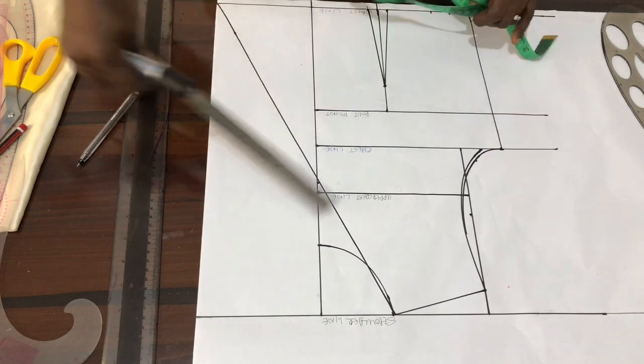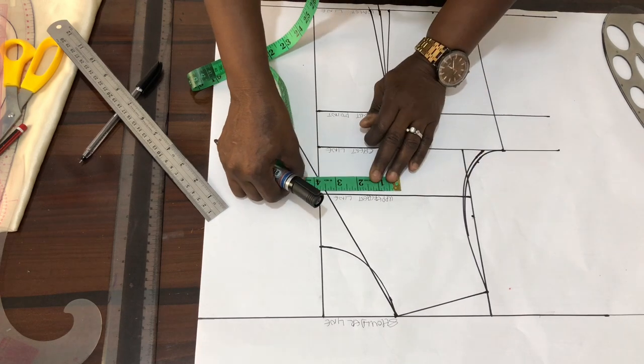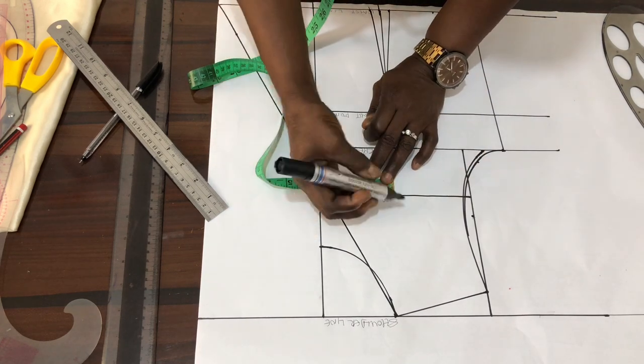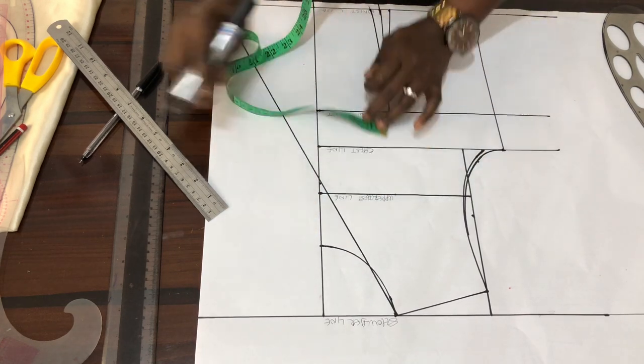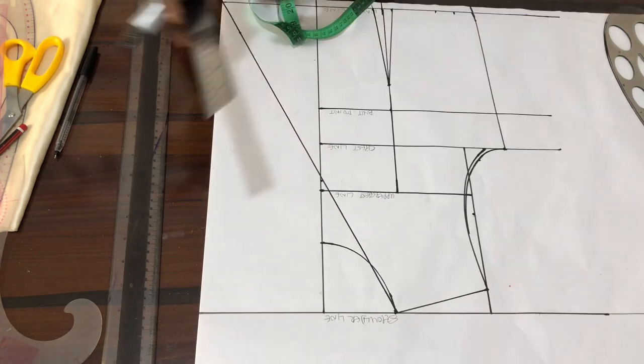So, I get this, the bust, I mean bust span, which is 3.5. I get it here. I mark it. Then, let me just connect it.